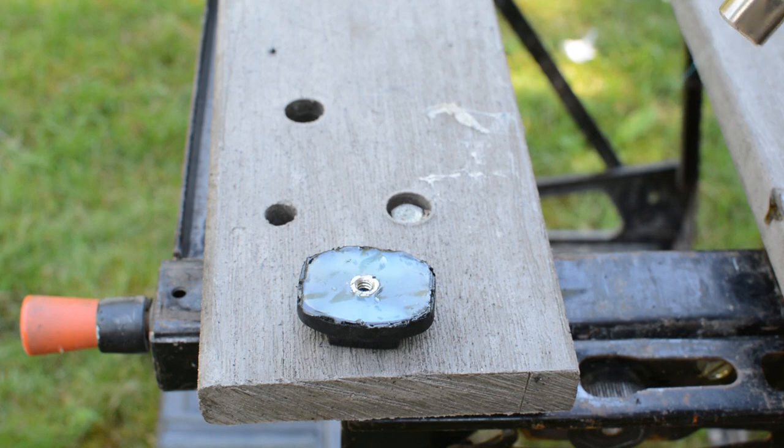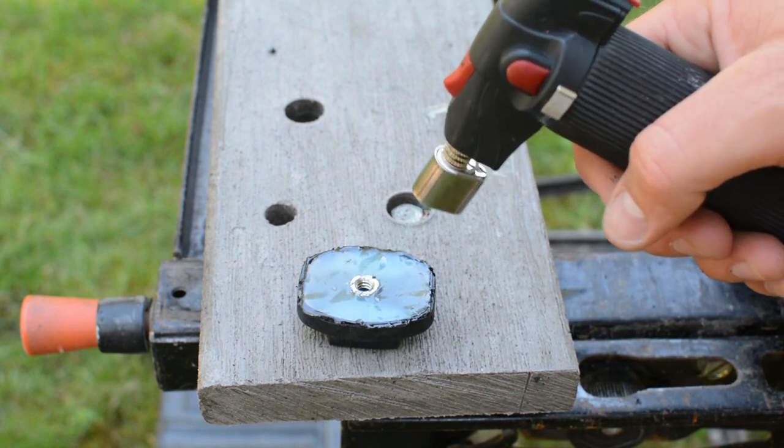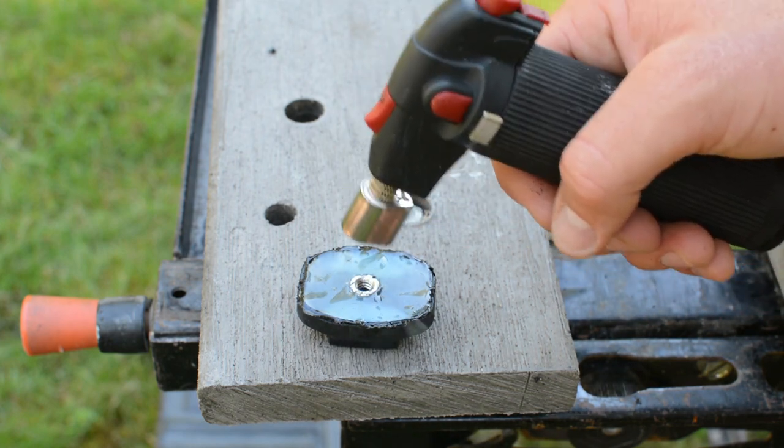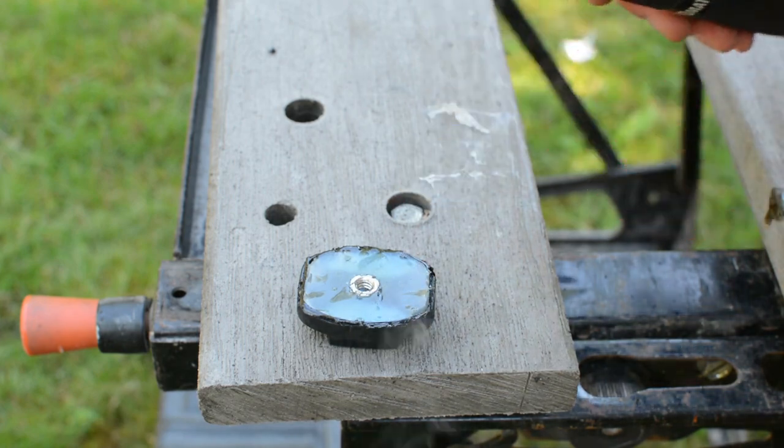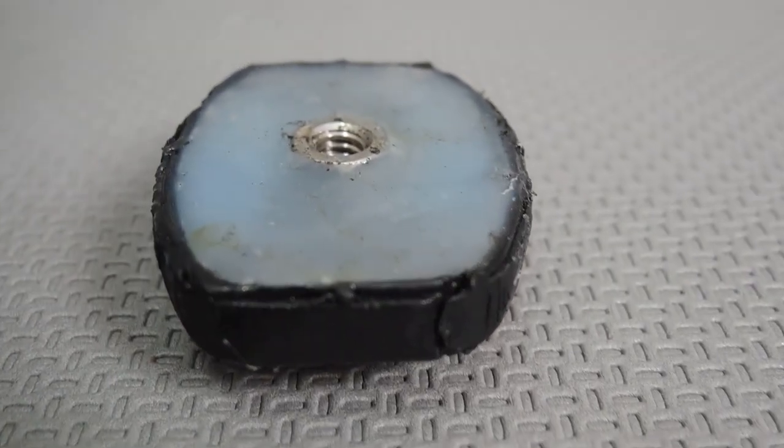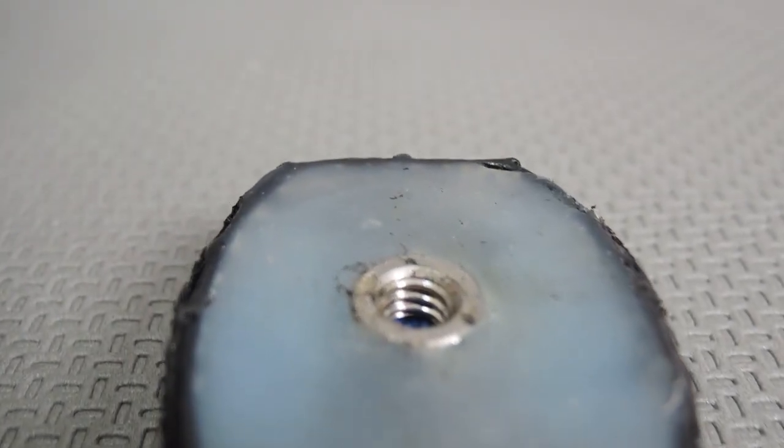The final thing I did, and this is optional however I really do recommend doing it, was to take a lighter and just heat up the exposed hot glue on the bottom of the mount. What this did was re-liquify the little bit of hot glue on that outside layer and smooth out the entire bottom of the mount.